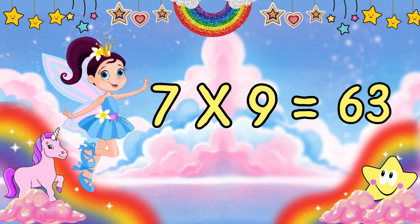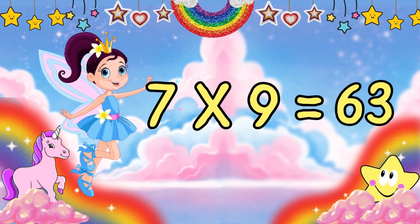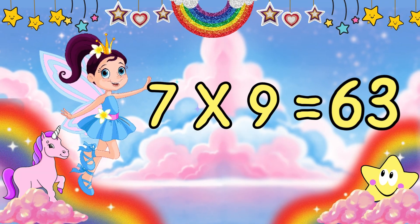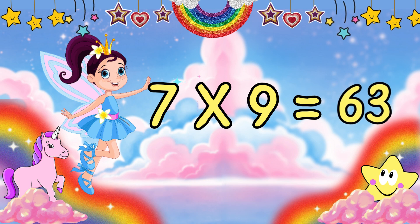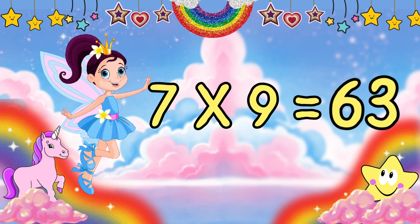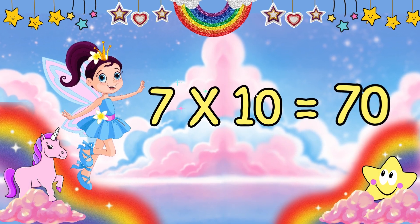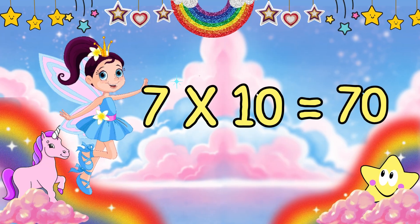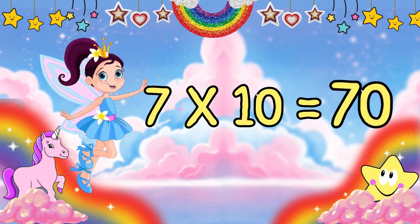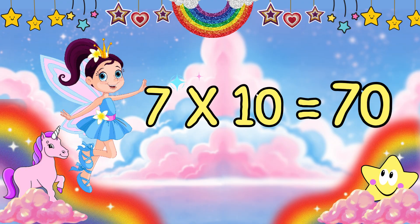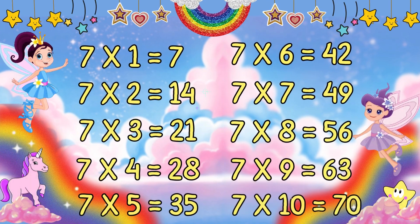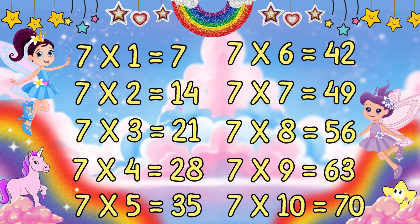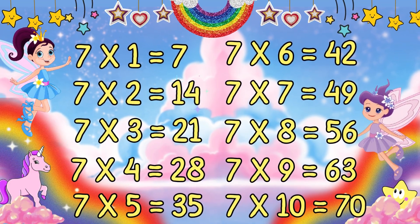Do you know what 7 times 9 is? 7 times 9 is 63. Can you say 63? S-I-X-T-Y, 60, T-H-R-E-E, 3, 63. Do you know what 7 times 10 is? 7 times 10 is 70. Can you say 70? S-E-V-E-N-T-Y, 70. Wow! You did great learning the 7 times table. Let's quickly remember what we learned.